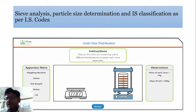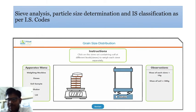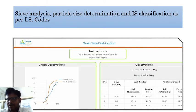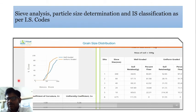After 10 to 15 minutes, we calculate the soil mass retained on each sieve. With the help of the mass retained on each particular sieve, we calculate the percentage of finer for each sieve.